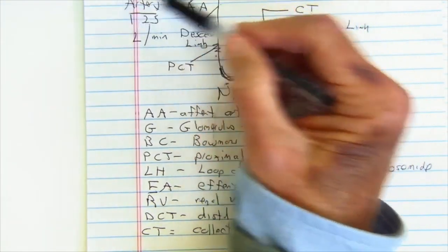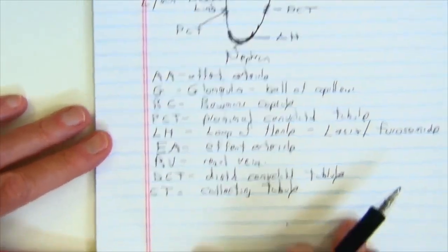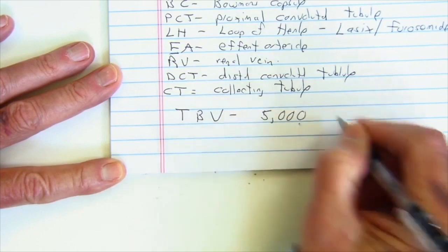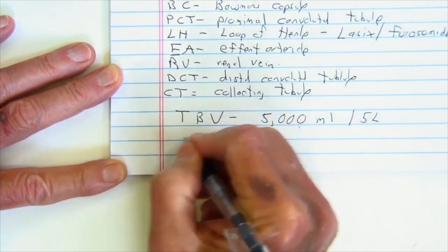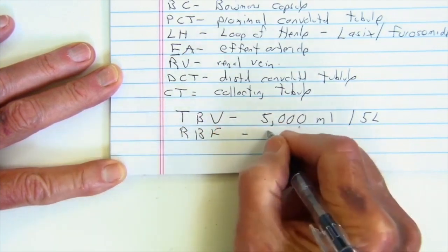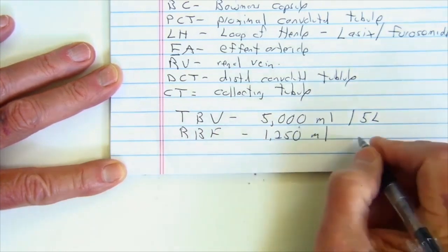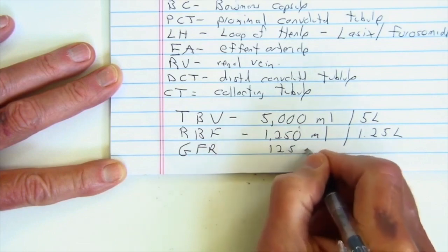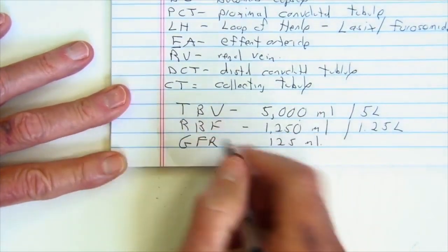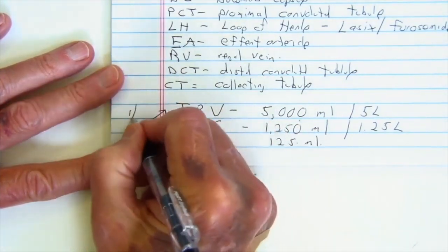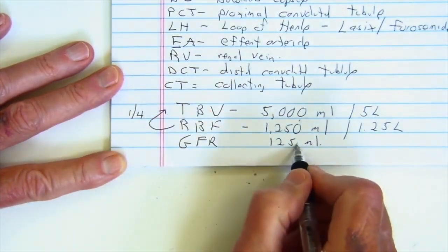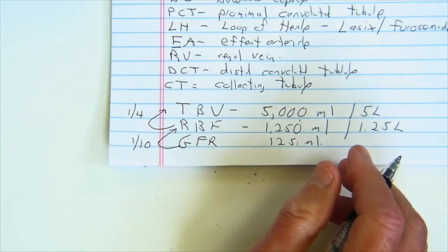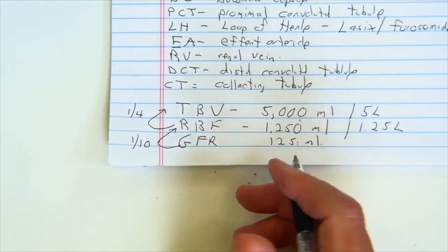Let's recap the magic numbers: TBV — total blood volume — is 5,000 milliliters or 5 liters. RBF — renal blood flow — is 1,250 milliliters or 1.25 liters. GFR is 125 milliliters per minute. The magic relationship is that 1,250 is one-fourth (25%) of 5,000, and 125 is one-tenth (10%) of RBF. So our kidneys are only 10% effective at filtering our blood per minute.